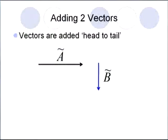Adding vectors is really easy. All you have to do is take the head of the first vector and add it to the tail of the second vector. So we add vectors head to tail.